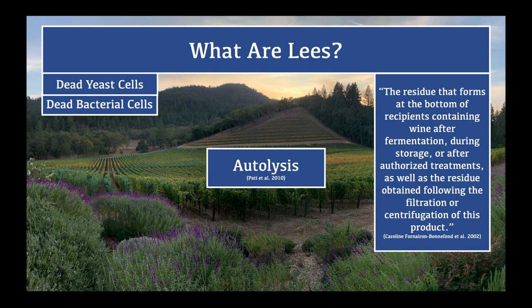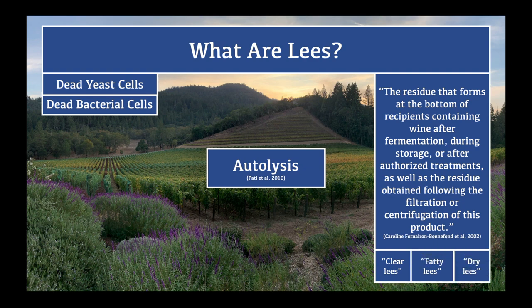There are three categories of lees. First are the clear lees, or wine deposits, obtained after clarification — they do not dry out completely and still contain a certain amount of wine. Next are the fatty lees, which contain less wine than the clear lees. And then there are the dry lees, from which no wine can be extracted. A wine is called sur lie if no clarification is performed once alcoholic fermentation is finished.